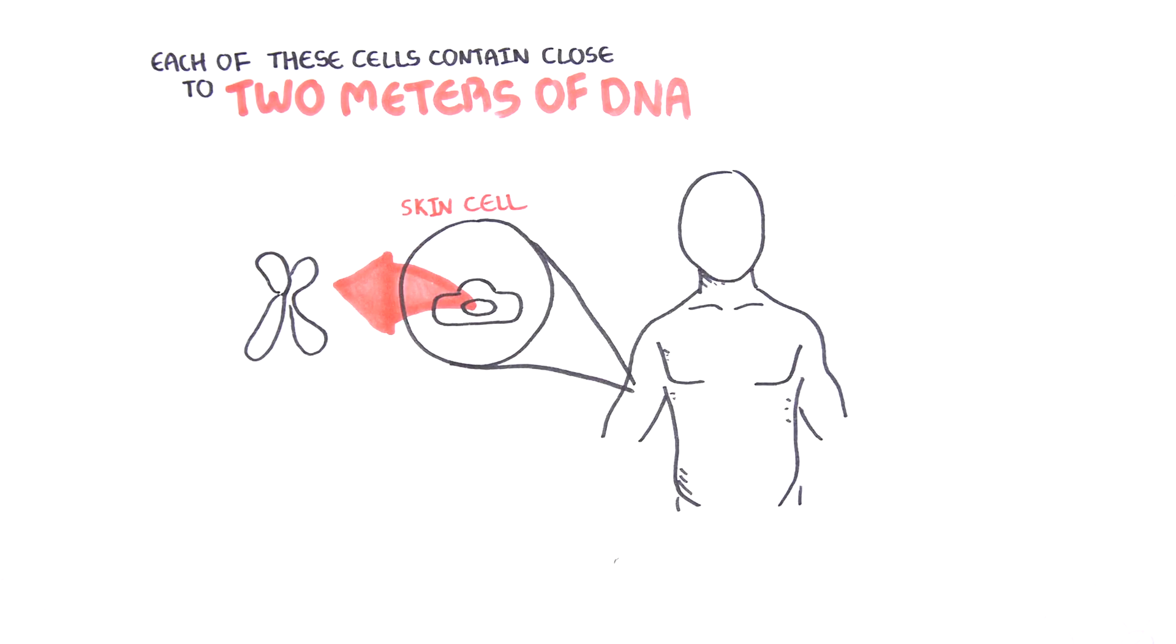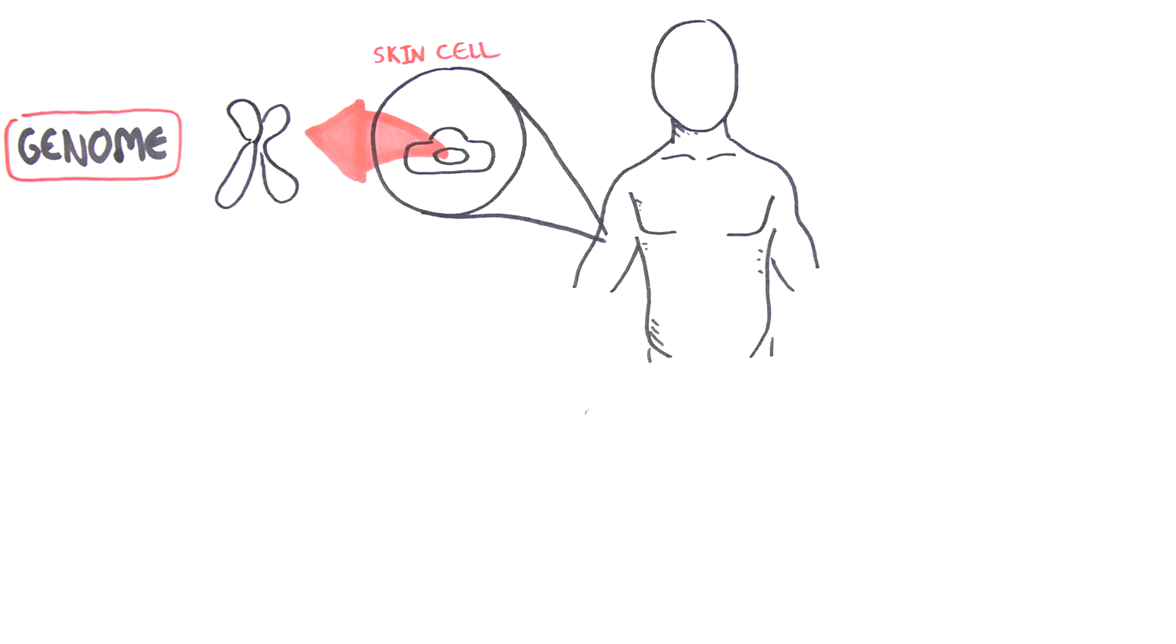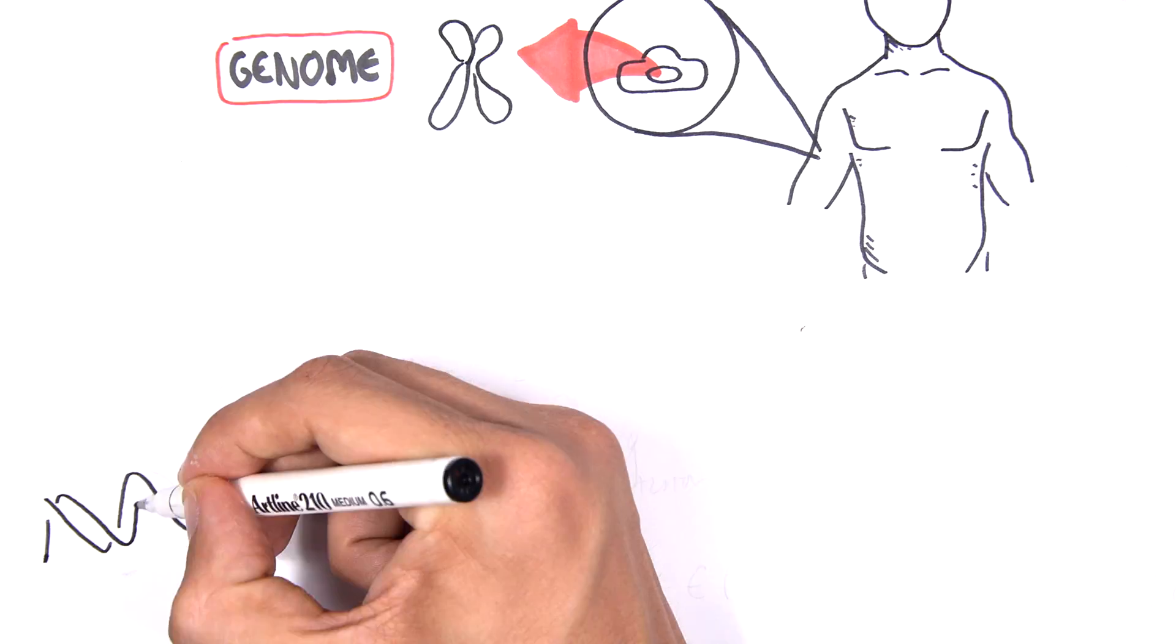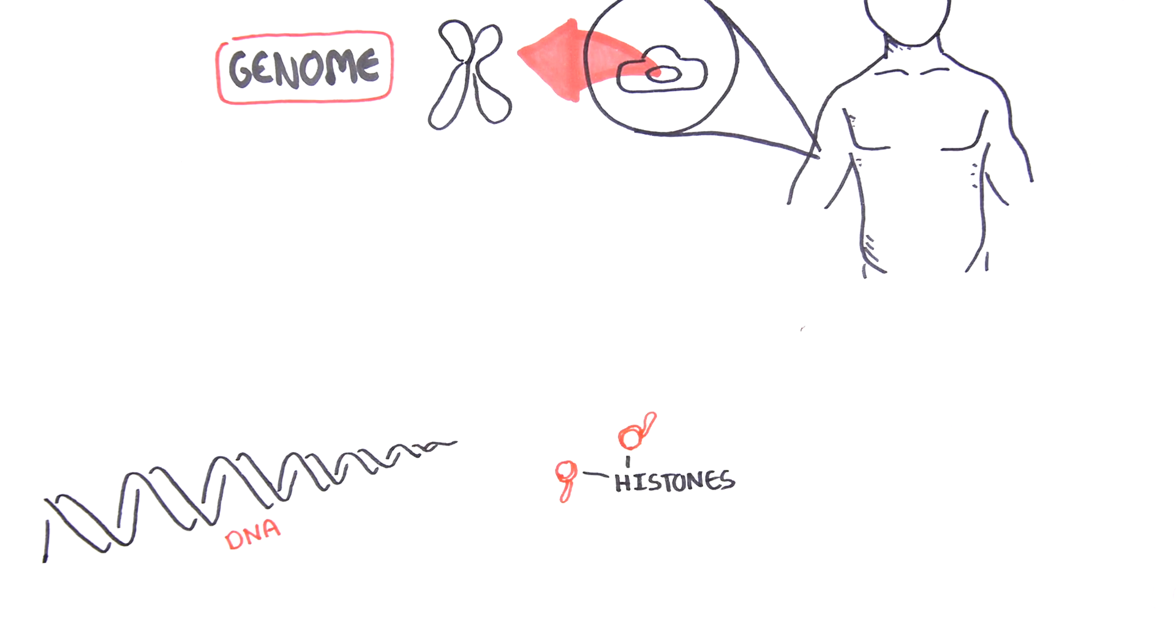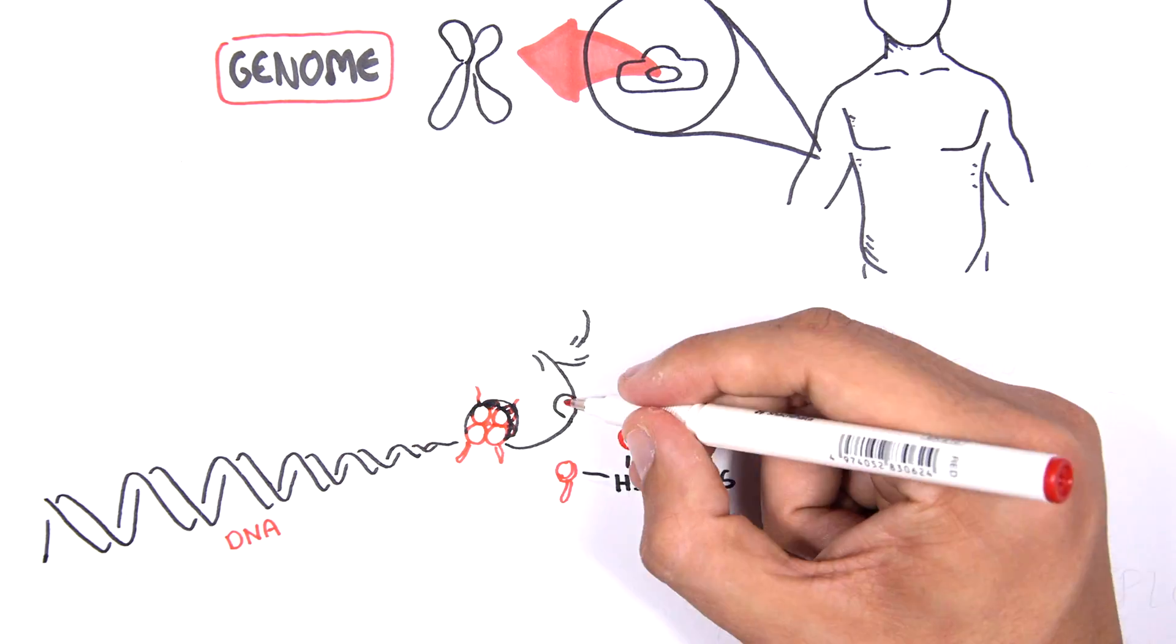All the genetic material in our body is called a genome. Because our DNA is very long, cells package up their DNA together with proteins known as histones. The DNA and protein complex is known as chromatin.